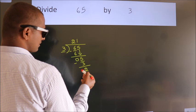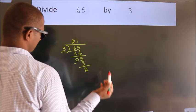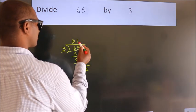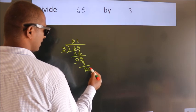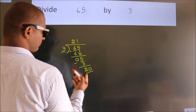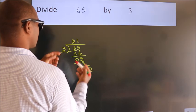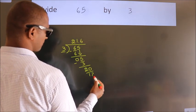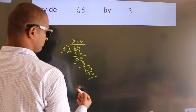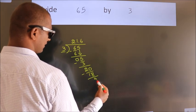After this, there are no more numbers to bring down. So what we do is put a dot and take 0, making 20. A number close to 20 in the 3 table is 3 times 6, which is 18. Now we subtract and get 2.